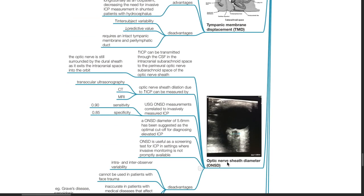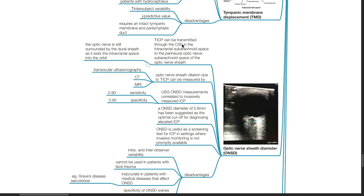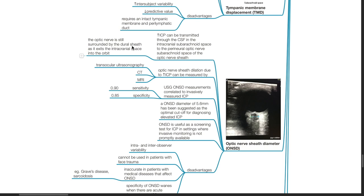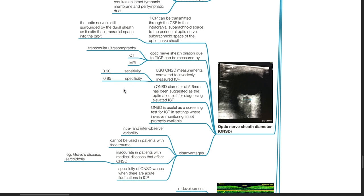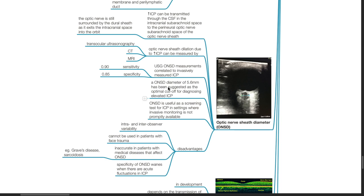Optic nerve sheath diameter. Raised ICP can be transmitted through the CSF in the intracranial subarachnoid space to the perineural optic nerve subarachnoid space of the optic nerve sheath. The optic nerve is still surrounded by the dural sheath as it exits the intracranial space into the orbit. Optic nerve sheath dilation due to raised ICP can be measured by transocular ultrasonography, CT or MRI scans. Ultrasound ONSD measurements correlate to invasively measured ICP with a sensitivity of 90% and specificity of 85%. An ONSD diameter of 5.6 mm has been suggested as the optimal cut-off point for diagnosing elevated ICP. Optic nerve sheath diameter is useful as a screening test for raised ICP in settings where invasive monitoring is not promptly available.